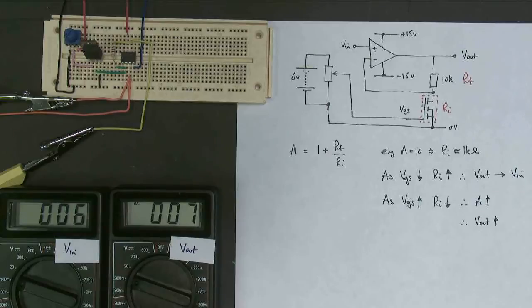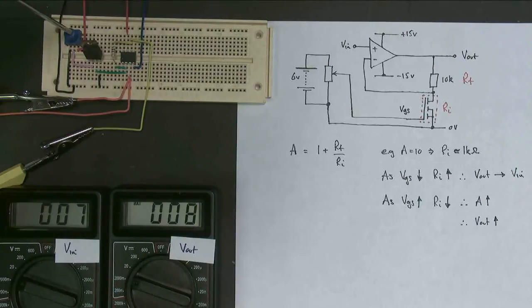There we go. So that's back to about 7 millivolts going in, 7 millivolts coming out. Let's see what happens as we turn the gate source voltage up.